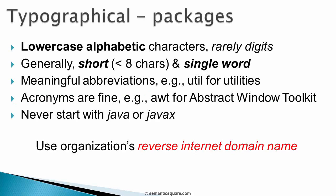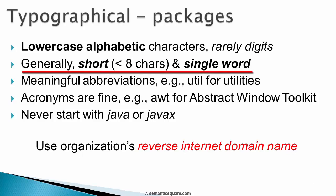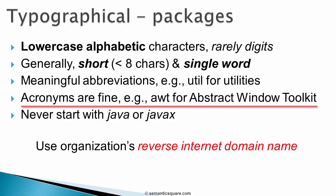Let's begin with typographical recommendations and start with packages. Note that there are no separate grammatical naming recommendations for packages. We already looked at this during our discussion on how to name packages, but let's quickly glance through them. Package names include one or more components separated by dots. The components should use lower case alphabetic characters and rarely digits. They should generally be short with eight or fewer characters and generally single words. Meaningful abbreviations are fine and so are acronyms like AWT.